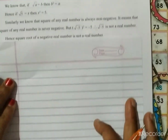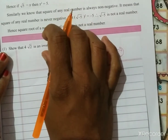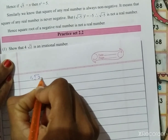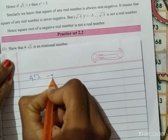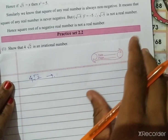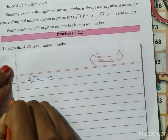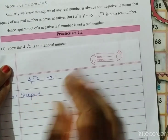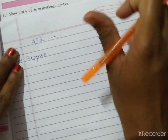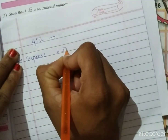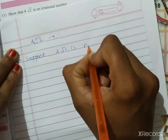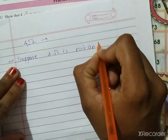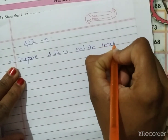So the question is: show that 4√2 is an irrational number. We have to make a claim that it is irrational. For that, first suppose — let us suppose — that 4√2 is not an irrational number. We consider it is not an irrational number.